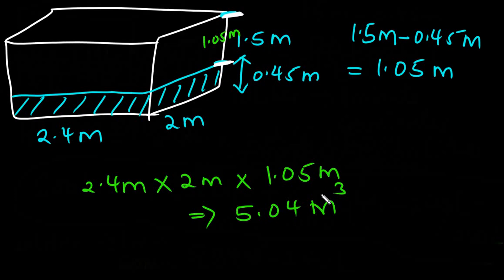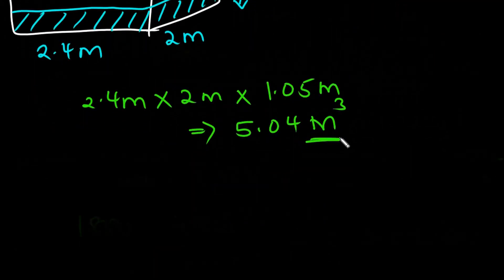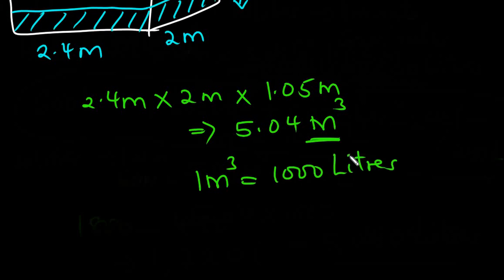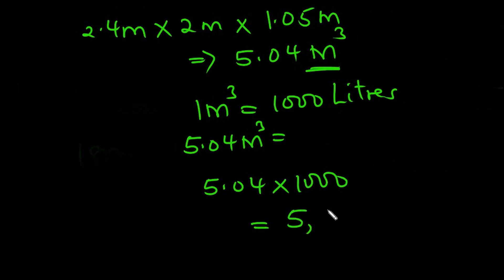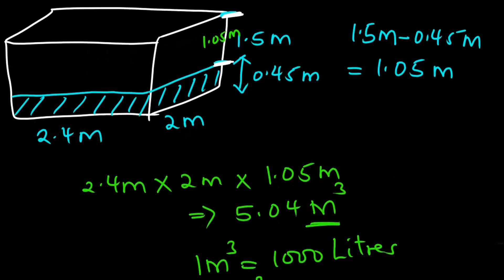Our question requires us to get the amount in liters, so we need to know the relationship between cubic meters and liters. The relationship is that 1 cubic meter equals 1,000 liters. So for 5.04 cubic meters, we cross multiply: 5.04 times 1,000 equals 5,040 liters. That is the amount of water needed to fill the tank.